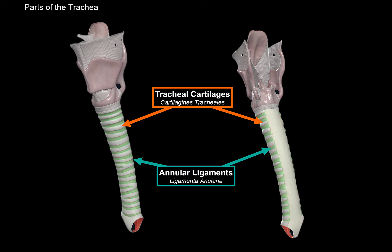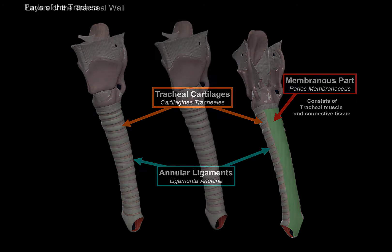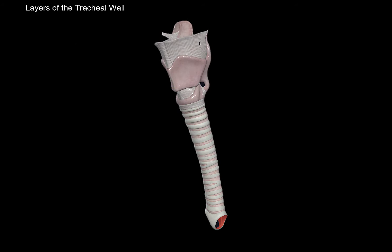On the backside, you're gonna have a fibromuscular membrane connecting the tracheal cartilage together at their dorsal edges. We call it the membranous part of the trachea. It consists of tracheal muscles and connective tissue. So that's basically the structures of the trachea.